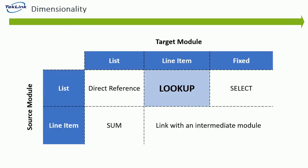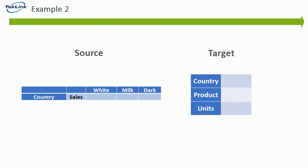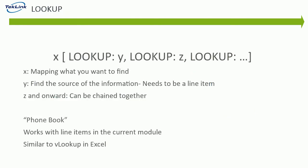Our next example is a lookup. This is the opposite situation of the sum function, where our source has a list as a dimension and our target has that same list as the formatting of a line item. This module displays the number of units sold based on country and product. If we had a long list of countries and products, what would be a fast way to find the total sales of the two values? The syntax for a lookup module is going to look something like this, where x is going to be a mapping of what you want to find and y is going to be the source of that information.